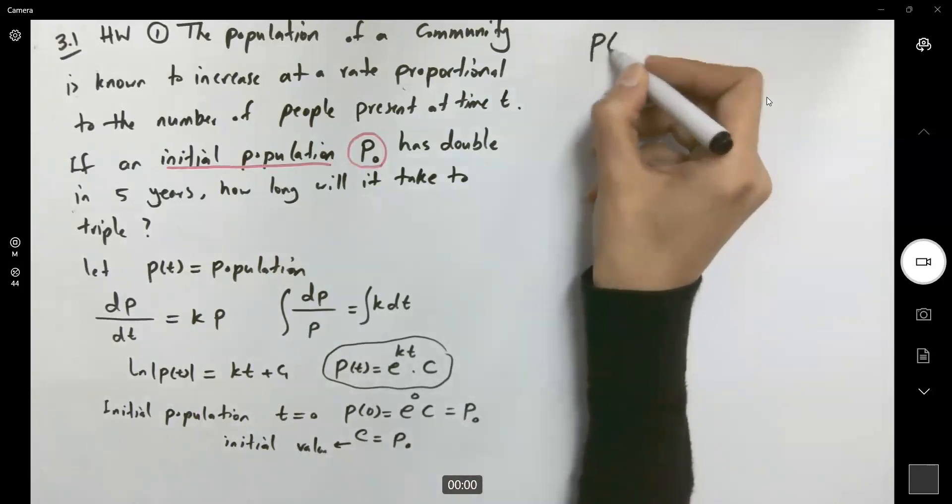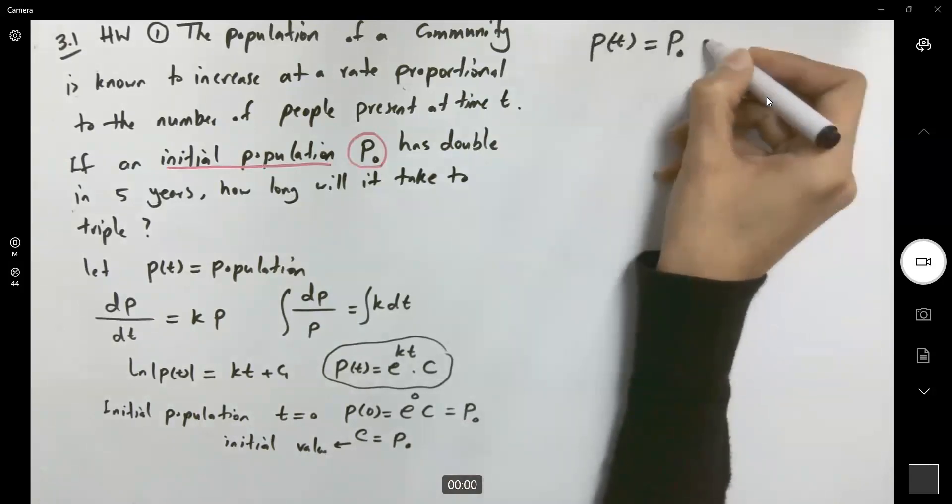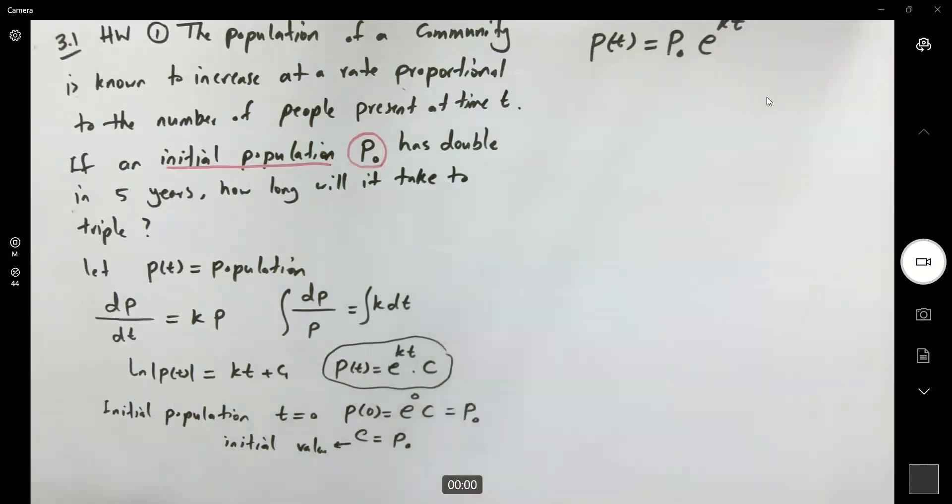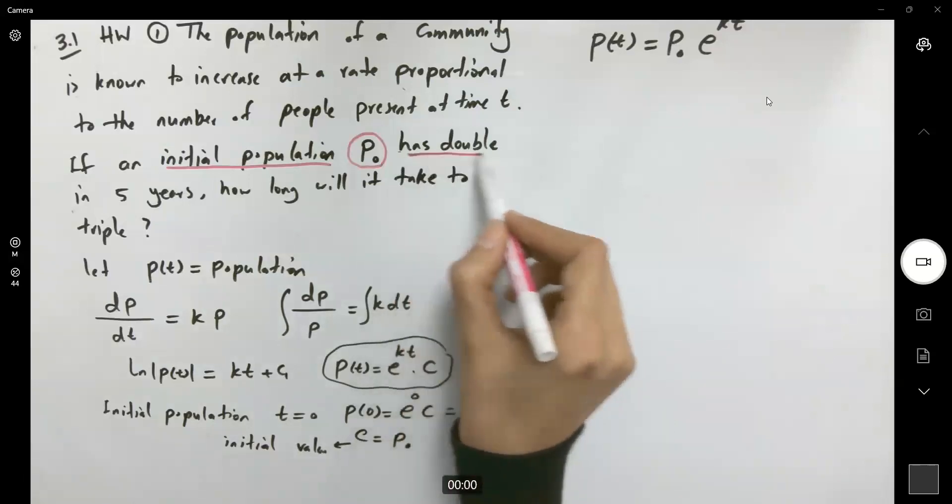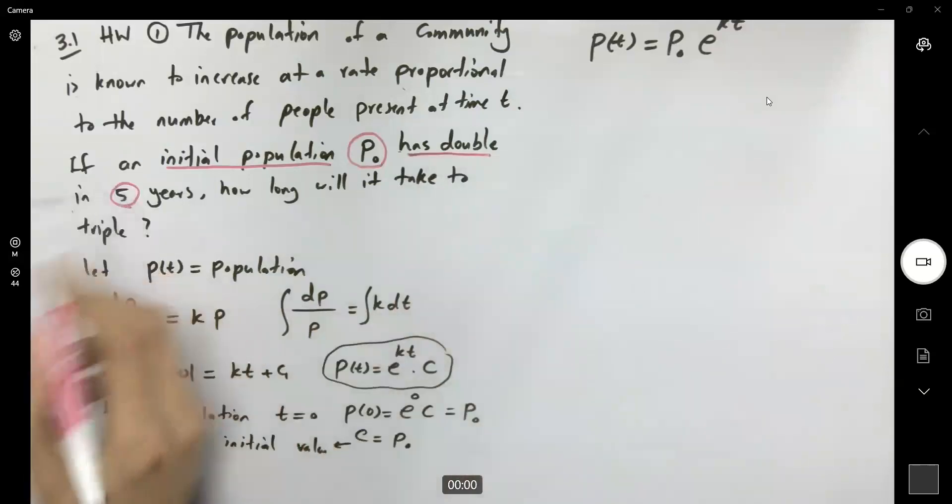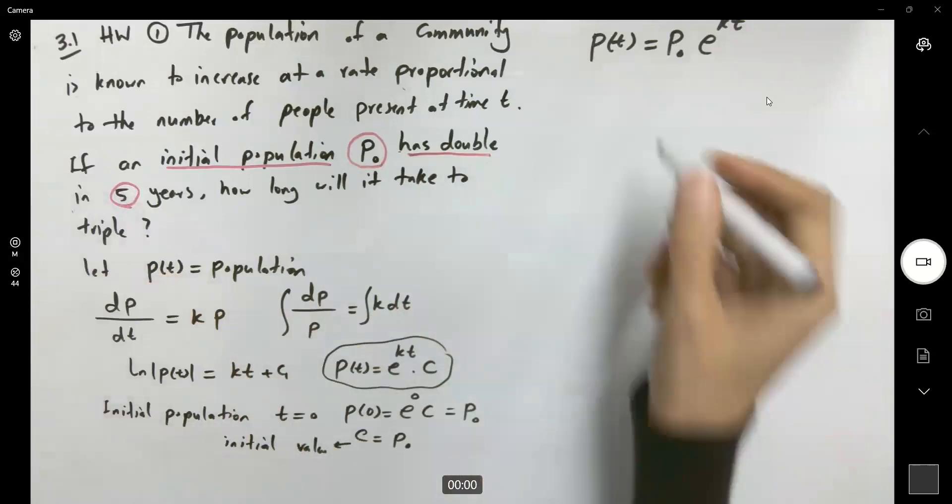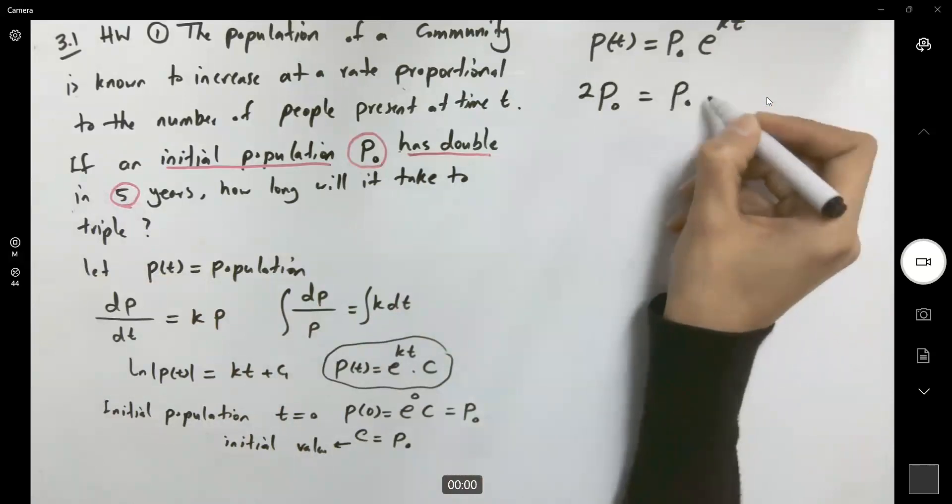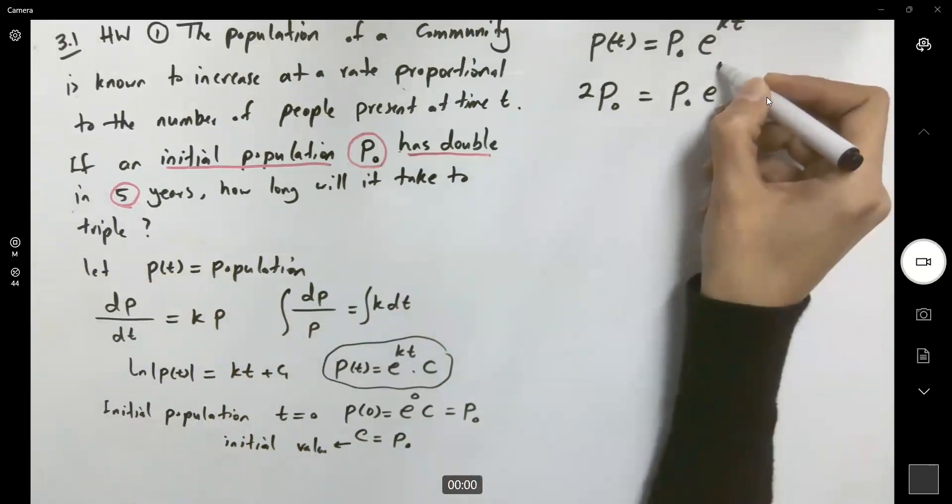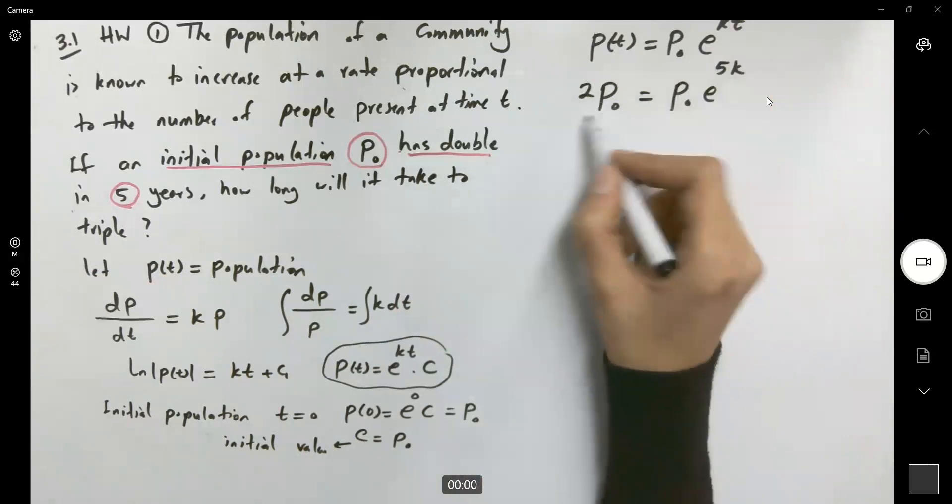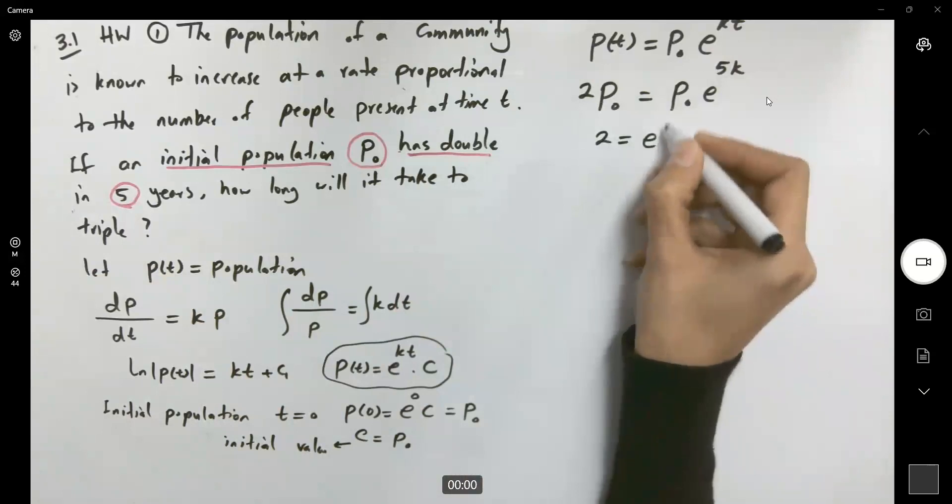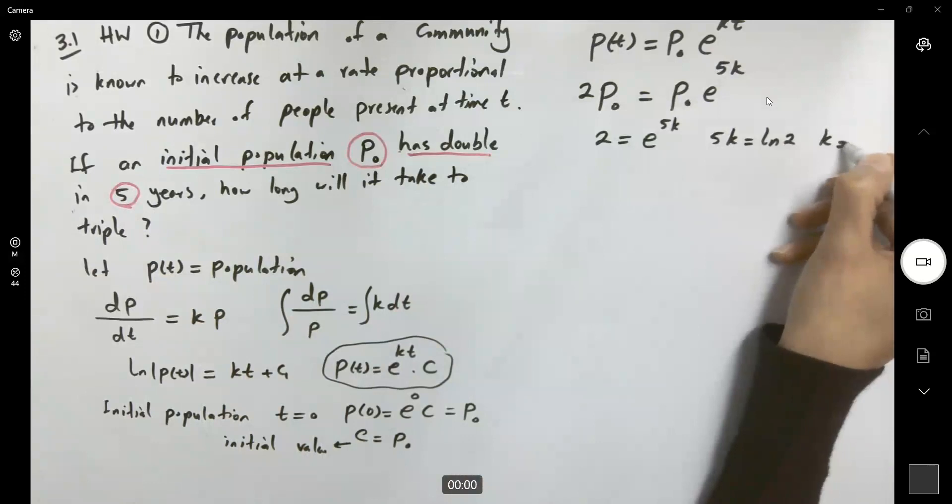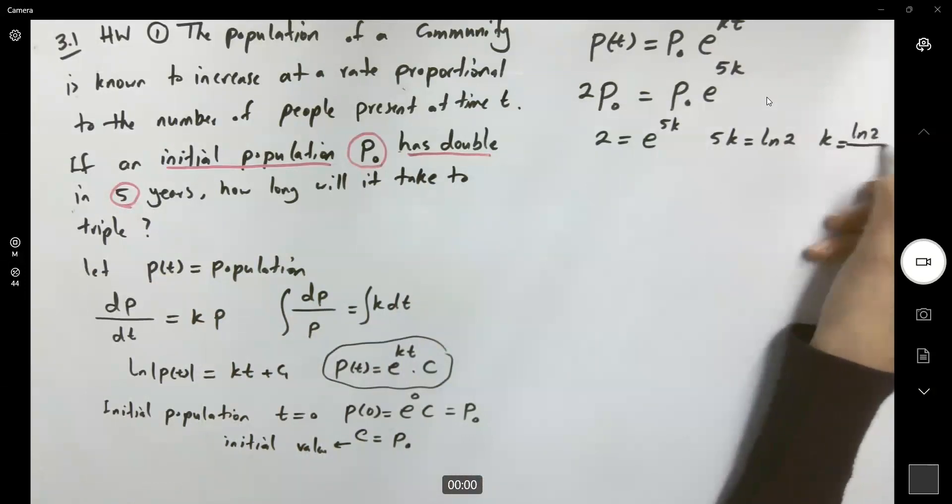We can write p(t) = p₀e^(kt). What else is given? The initial population has doubled in five years, so 2p₀ = p₀e^(5k). Dividing both sides by p₀: 2 = e^(5k), so 5k = ln(2), and k = ln(2)/5.